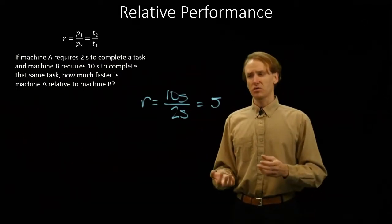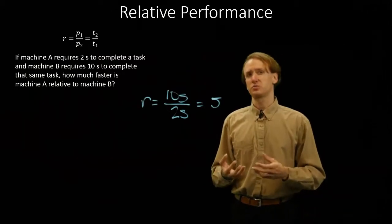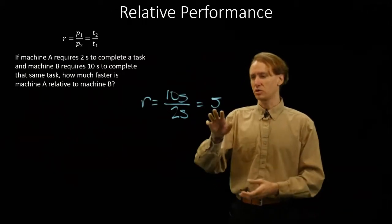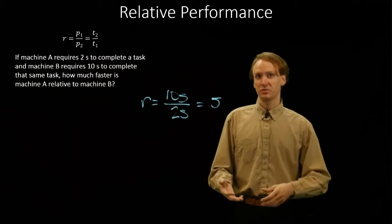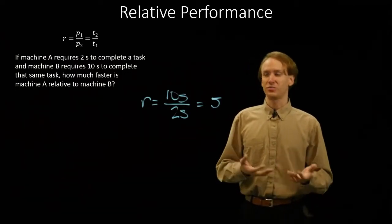If we get a number smaller than one though, that then means that one of those machines is worse than the other. If we get a number larger than one, then we have a machine, one machine is better than the other. What we want to know is which one is which.